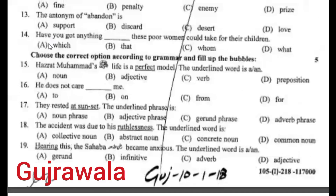Take the correct option according to grammar. Dr. Muhammad's life is a perfect model — 'perfect model' is an adjective. B option: He does not care. D option: They rested at sunset — 'rested' is an adverb phrase. D option: The accident was due to his ruthlessness — abstract noun. B option: Hearing this, the Sahaba became more anxious — 'hearing this' is the underlined word. Objective. D option.